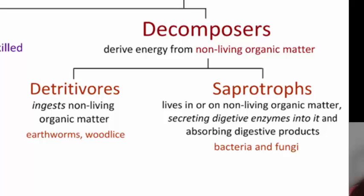Examples of detrivores are earthworms and wood lice. Saprotrophs is the correct name for bacteria and fungi. Saprotrophs are going to live on or in non-living organic matter. They are going to secrete digestive enzymes into that organic matter and then absorb those digestive products — that would be your bacteria and your fungi. We're going to go into these a little bit more in the next couple of slides.